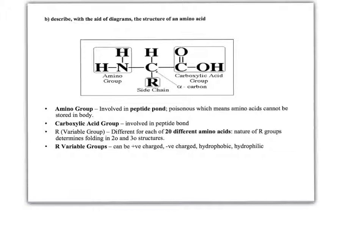The first thing to consider when looking at proteins is the structure of the monomer that proteins are made out of. Remember that proteins are known as polypeptides, and polypeptides, like any polymer, are made of monomers. The monomer for a protein is an amino acid, and you have to know the structure of an amino acid.